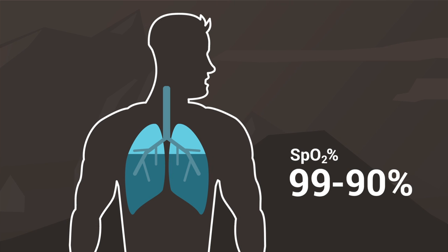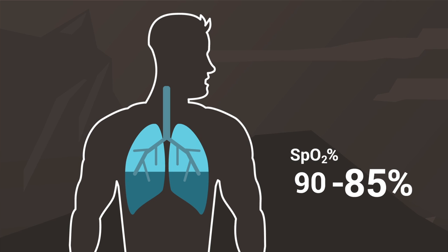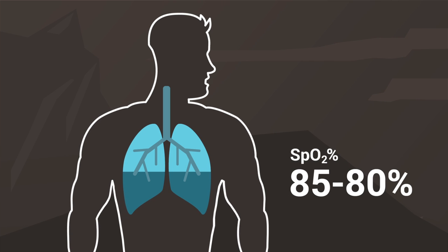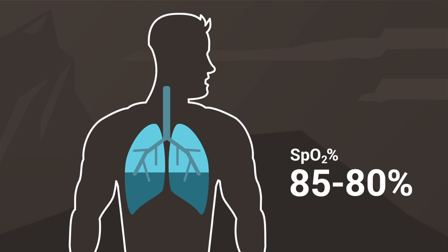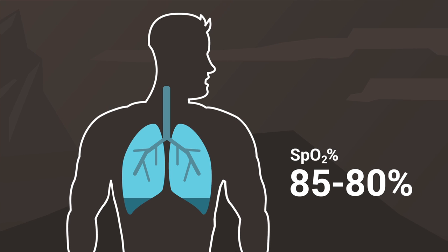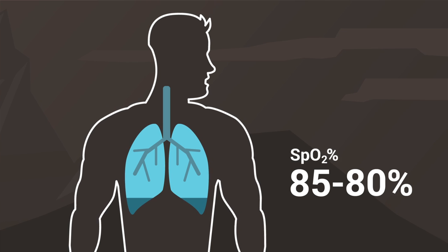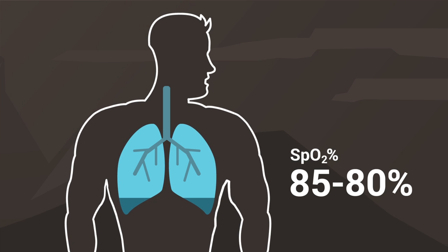As the reading drops to between 90 and 85% take slightly deeper breaths as if using 50% lung capacity. At 85% SpO2 continue to breathe slowly and gently but breaths should now fill the lungs. If your SpO2 drops too low before you get below 80% take deeper breaths but keep these slow and gentle.